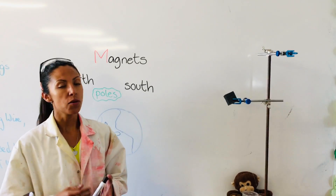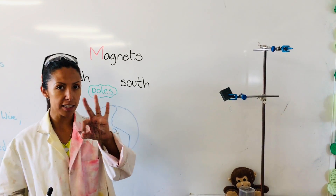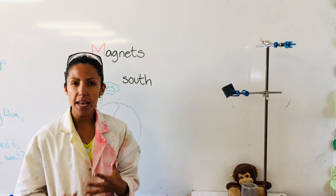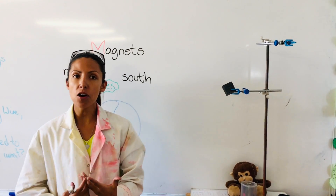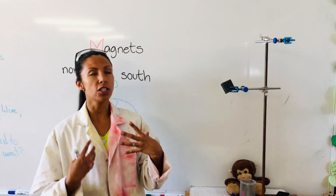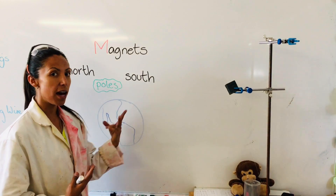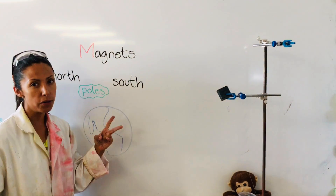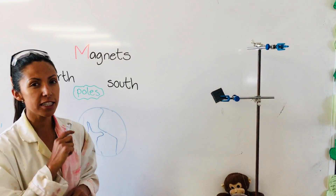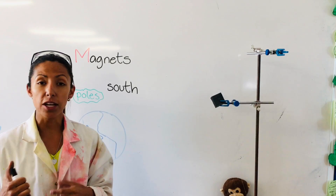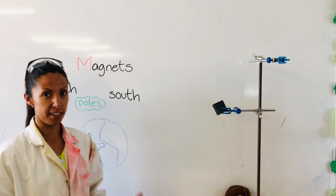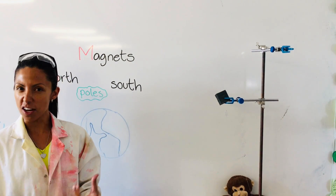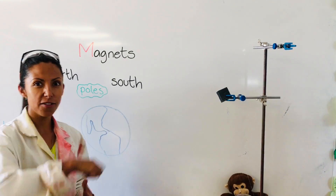Hello again guys, welcome to the third lesson of magnets. Today we're going to learn how the planet Earth also has two poles. To help us understand this, we're going to have a special guest today — Mr. Richmond is going to be here with us. Are you ready for this?